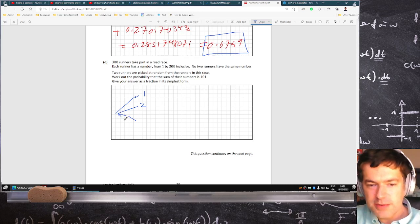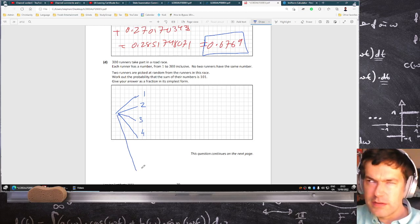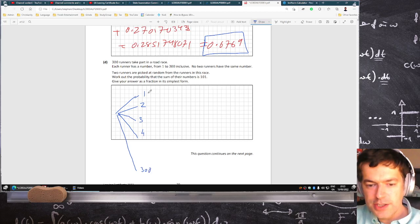Yeah, so I actually did do this one wrong. One, two, three, four, etc. All the way down to, did I do it wrong? Maybe not. All the way down to 300. And then each of these ones branch off as well. And there's 299 branches here.